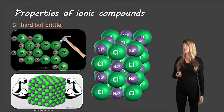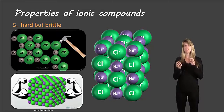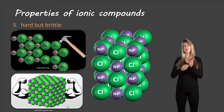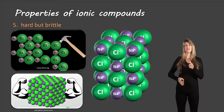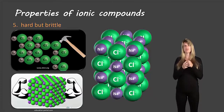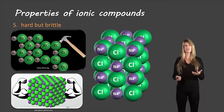Finally, ionic compounds are hard but brittle. Because the formula units are strongly attracted to each other, they form a rigid crystal structure. When that crystal breaks, it breaks along the edges of the formula units, so it won't be a smooth break — it'll be more like a crack in the crystal structure. They're very hard due to those strong attractions, but brittle because of how they break.